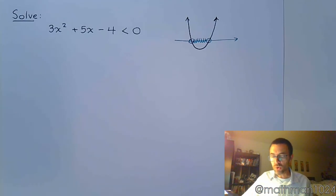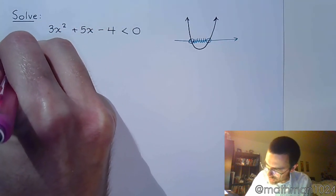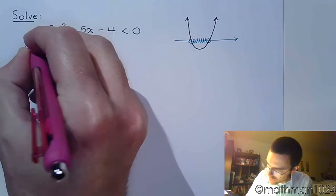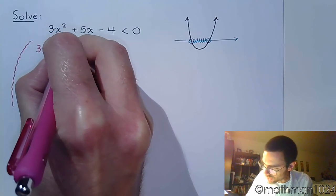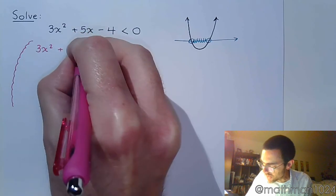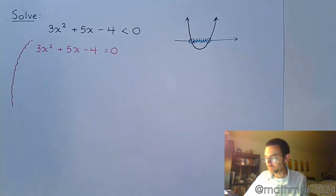All right, so in order for us to do that, we're going to rewrite this as we have done so many times before. We rewrite this as an equation. So 3x squared plus 5x minus 4 is equal to 0. All right, we just have to solve this.